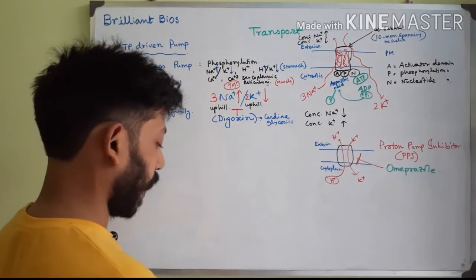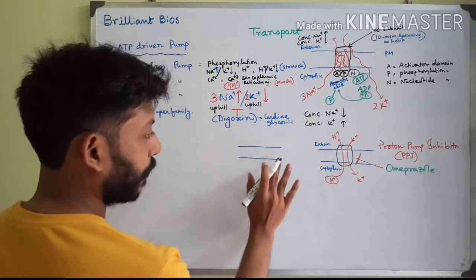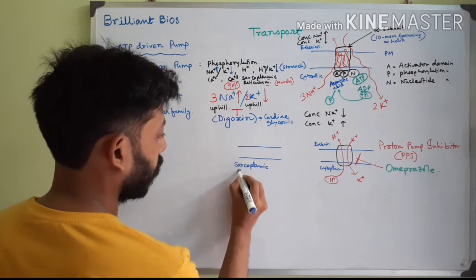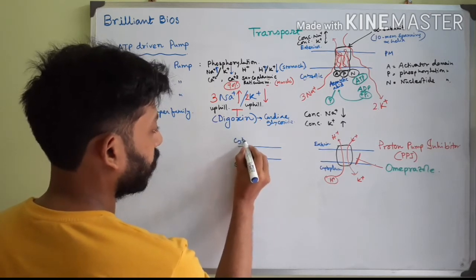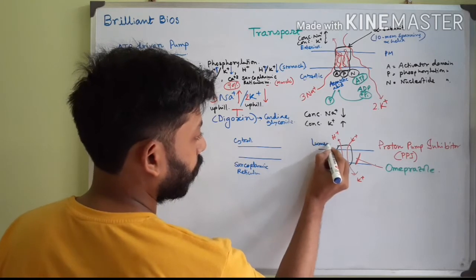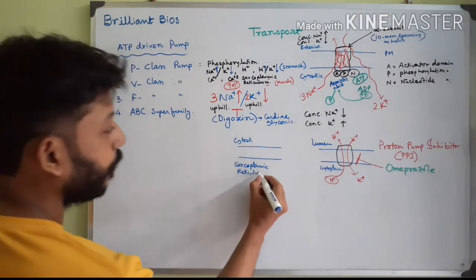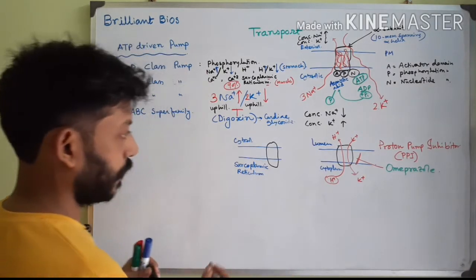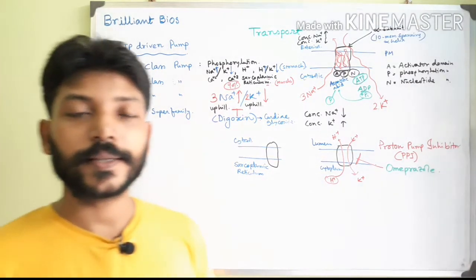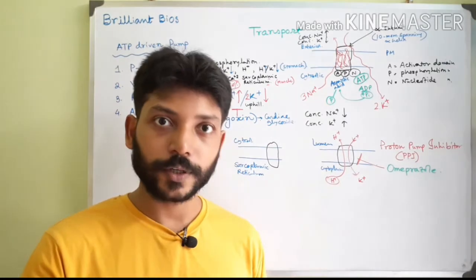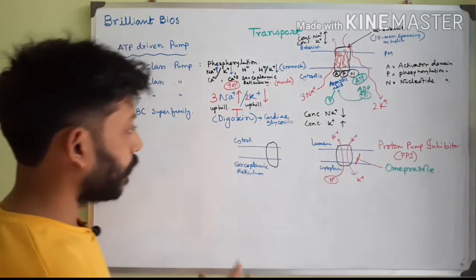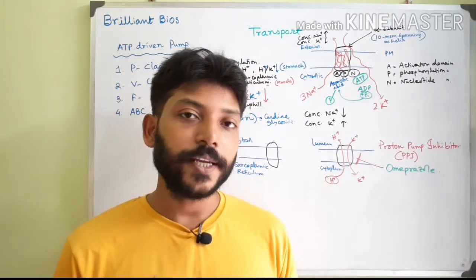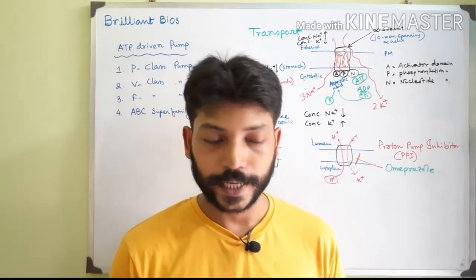In the sarcoplasmic reticulum, the inside is the lumen and the outside is the cytoplasm. The sarcoplasmic reticulum acts as a reservoir of calcium. The calcium concentration in the cytoplasm is kept very low, while the sarcoplasmic reticulum stores a very high concentration of calcium. This balance is important because calcium is critical for cell signaling, and even a subtle increase in cytoplasmic calcium triggers a signaling response.